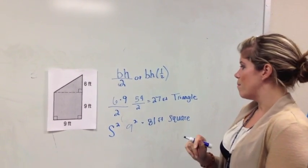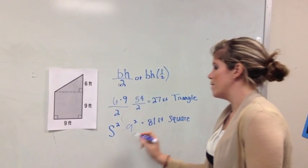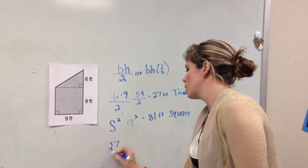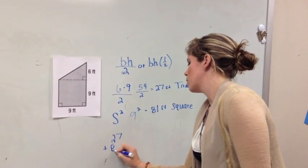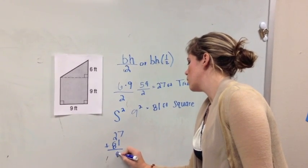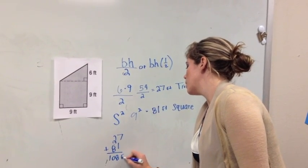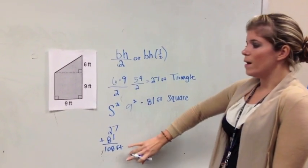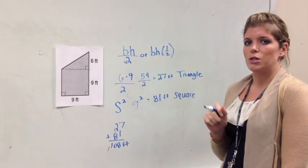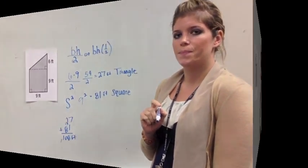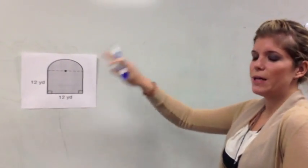My very last step, step 3, is I'm going to add 27 and 81 feet. And I get 108 feet. So the area of this composite figure is 108 feet. Alright, let's now tackle example number 2.